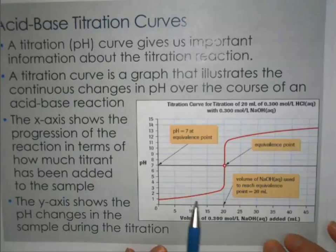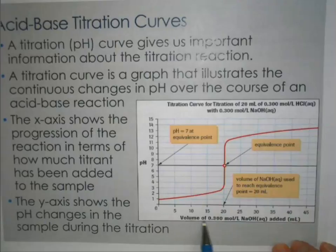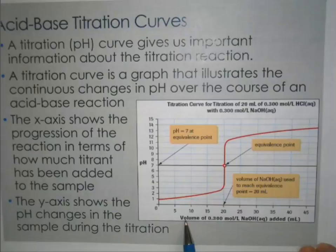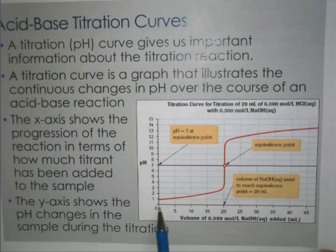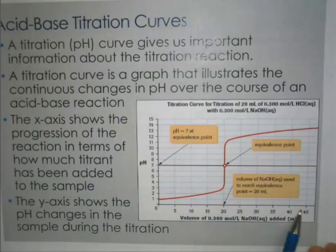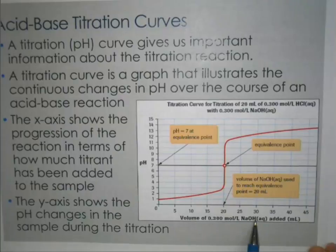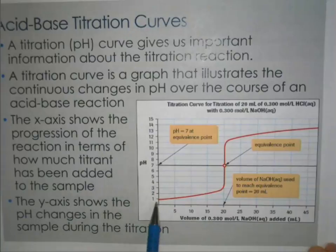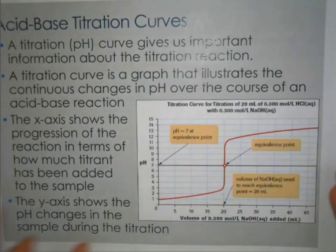In order to work with titration curves you need to make sure you're familiar with the standard way that we label them. On the bottom we always have the volume of titrant that's been added — this is essentially showing us the reaction progress over time, because as the titration proceeds you're adding more and more titrant. On the y-axis we always have the pH.